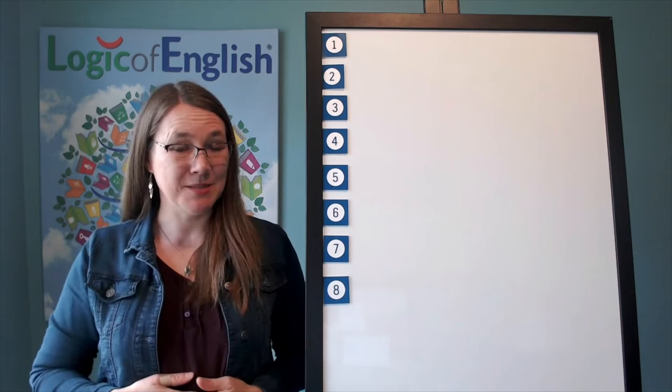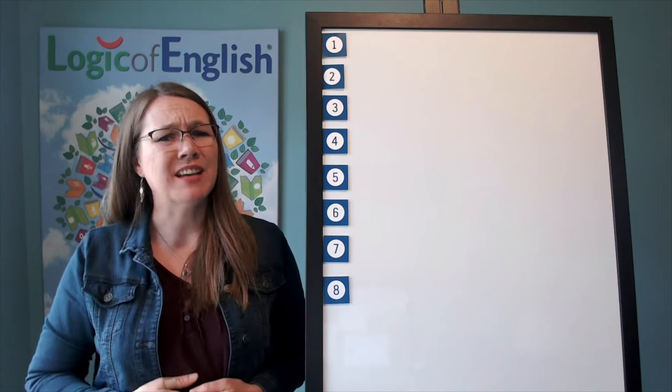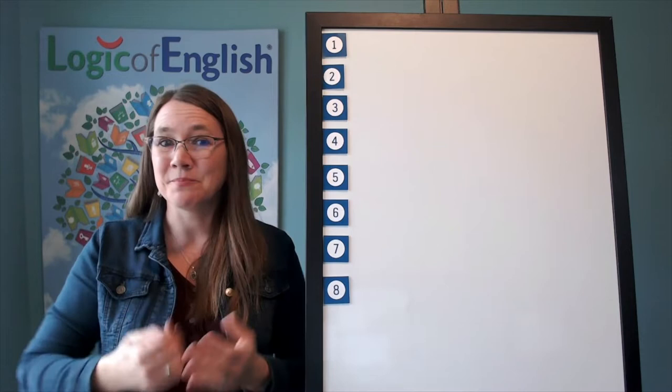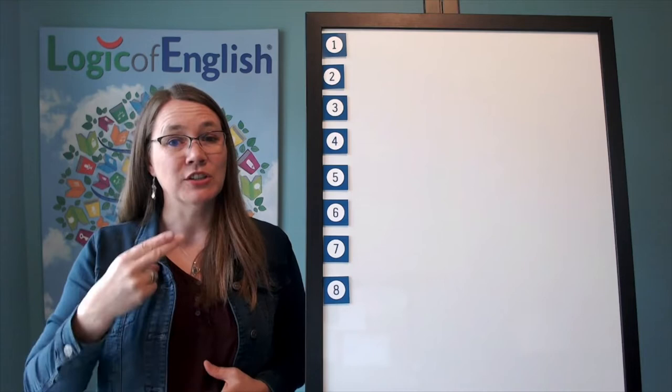What will we say to spell? Ev, er, e, thing. Let's do that one more time since it's four syllables. Ev, er, e, thing. All right. The first syllable is ev, eh, v.